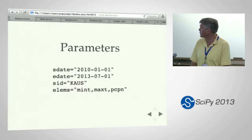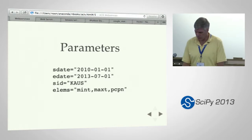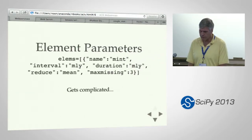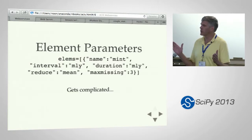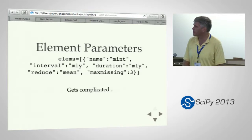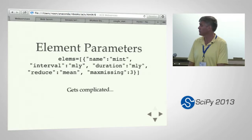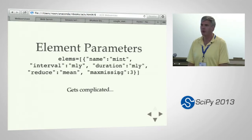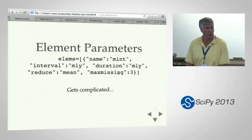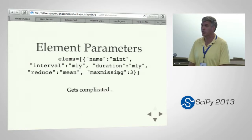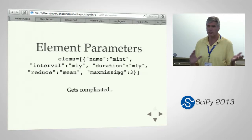We've tried to make simple requests simple, but more complicated cases are just possible. You still need to specify the type of element — min temperature — but you can also specify different reporting intervals and durations. For instance, for monthly mean minimum temperature, the interval is monthly, the duration is monthly, and the reduction takes the mean. We can also find the minimum of minimum temperatures, or for seasonal data ask for an interval of three months, a duration of three months, and iterate over those periods. Interval, duration, and reduction are how you set up each element.